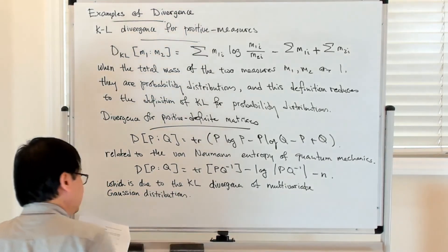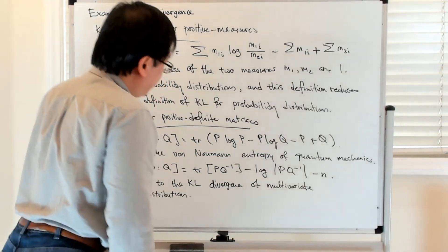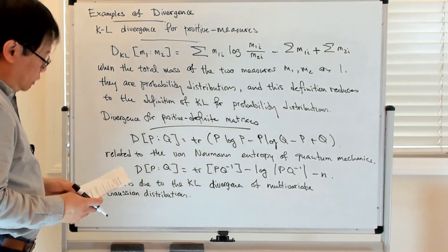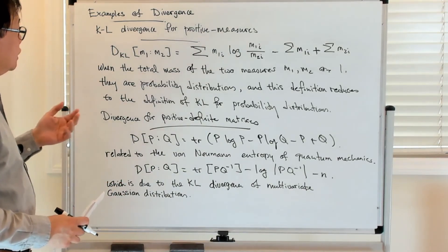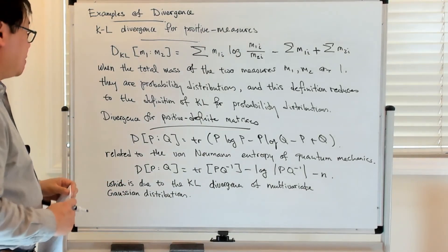And then there are other examples which I won't go into. So those are some possible examples of divergence functions for different classes of spaces.